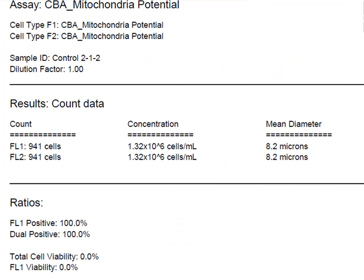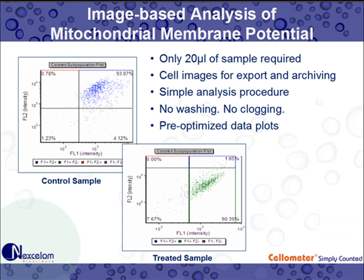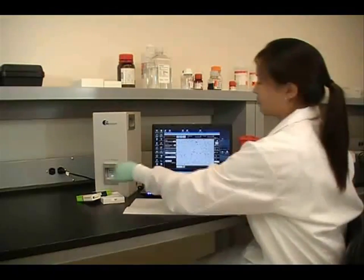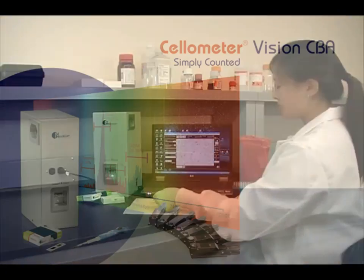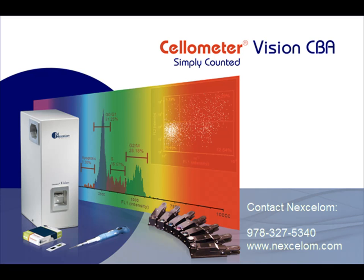Users can choose to print a second report containing both bright field and fluorescent images. Data tables and cell images can be easily exported for use in presentations and publications. After removing the disposable Cellometer cell counting chamber, the Vision CBA is ready to analyze the next sample. No washing or instrument setup is required. Cellometer Vision CBA offers researchers a simple, image-based option for cell-based assays. Visit Nexcelom.com or contact Nexcelom today to schedule an on-site demonstration with an experienced application specialist.